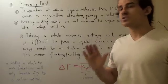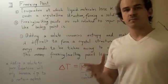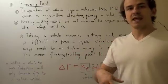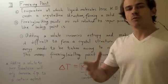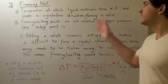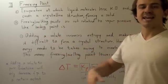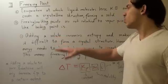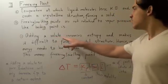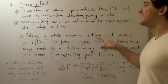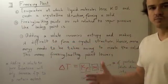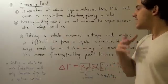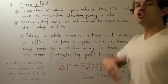The third colligative property is called the freezing point, or melting point. This is the temperature at which the liquid molecules lose kinetic energy, cannot sustain the liquid state, and form a crystalline structure called a solid. The freezing or melting point is not related to vapor pressure the same way boiling points are. By adding a solid or an impurity to a pure substance, we increase entropy and make it difficult to form a crystal structure, so more energy needs to be taken away, and the freezing and melting point lowers.